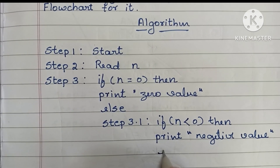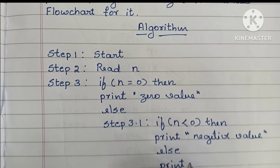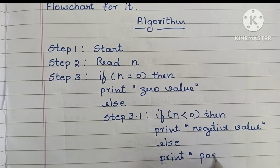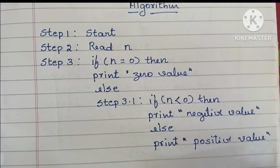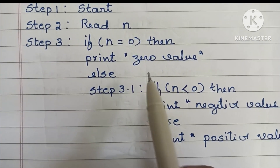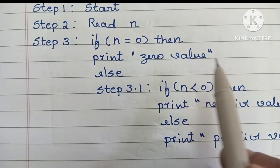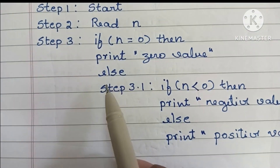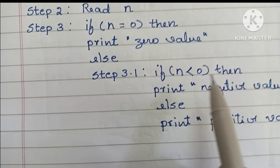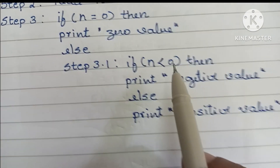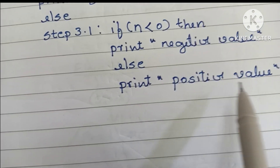If the condition N less than zero is false, then we have to print 'positive value'. So: if N less than zero, print negative; else print positive.